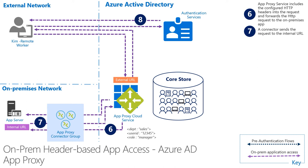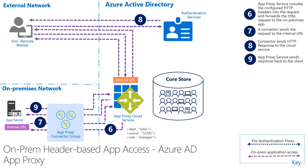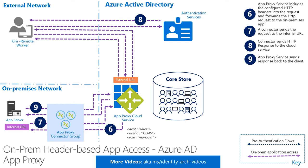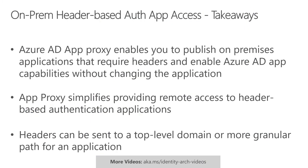In step seven, the App Proxy connectors pick up the request and pass it on to the internal URL, and the app can utilize the headers in the request as needed. Then in step eight, the response is directed back through the cloud service. And lastly, in step nine, App Proxy renders the content back to Kim and she can access PeopleSoft. From this point on, subsequent requests to the app will continue to include the headers.